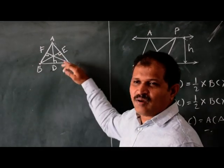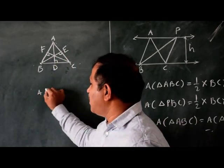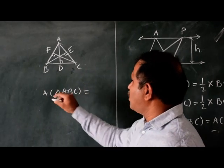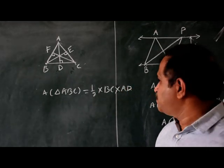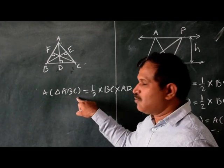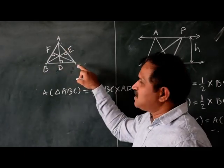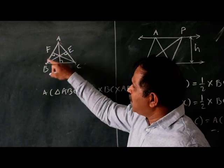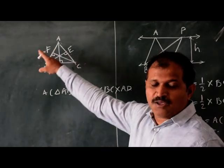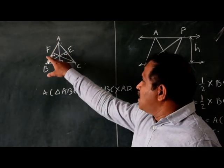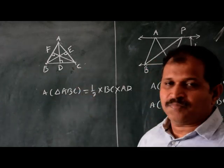So we can find the area of a triangle by considering any base and its corresponding height. For example, area of triangle ABC equals half into BC into AD. In the same manner, area of triangle ABC equals half into AC into BE. Again, area of triangle ABC equals half into AB into CF. So we can change the base and accordingly the height changes. All the altitudes drawn are in the interior of the triangle because it is an acute-angle triangle.